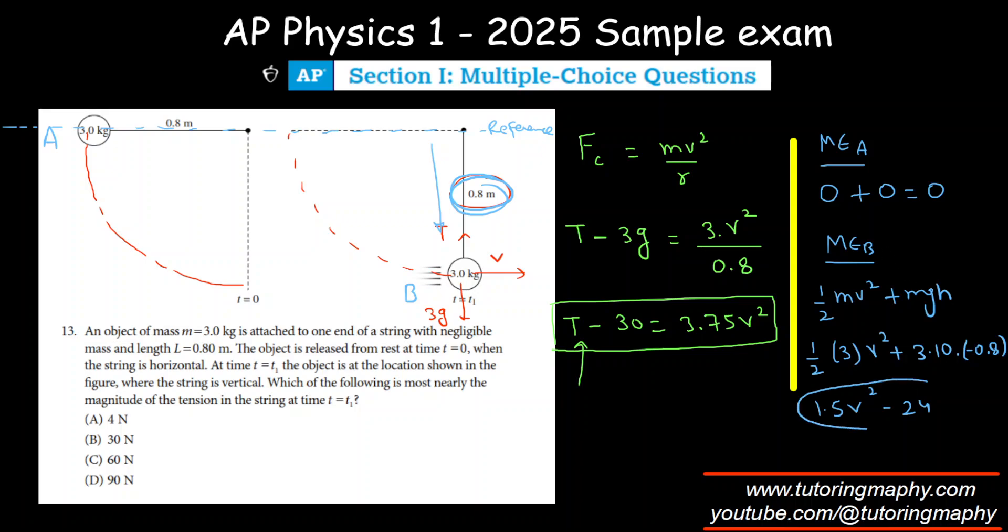The mechanical energy is conserved, so this final energy should equal this initial energy, which means 1.5v² minus 24 should equal 0. So 1.5v² should be 24, so v² should equal 24 divided by 1.5, which is 16.